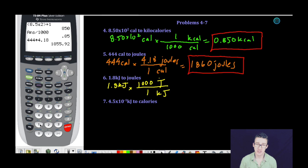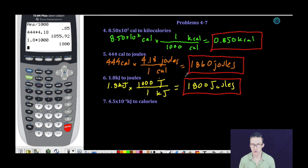And then jump back to my calculator. 1,800. 1,800 joules is the same thing as 1.8 kilojoules.